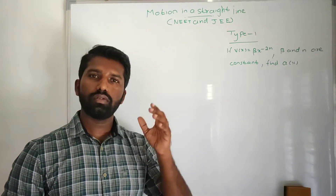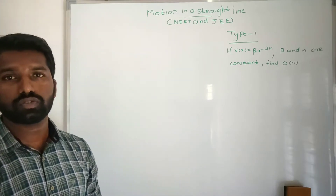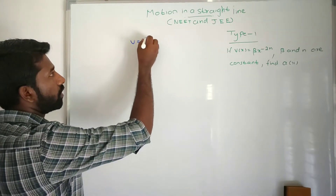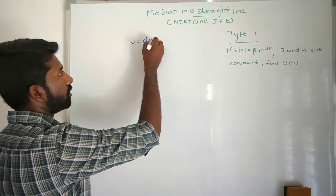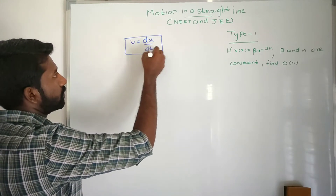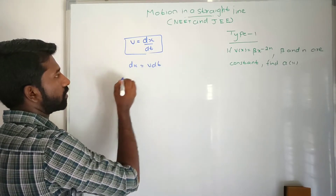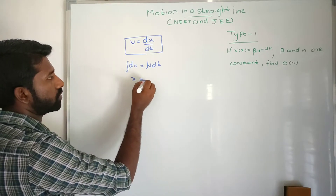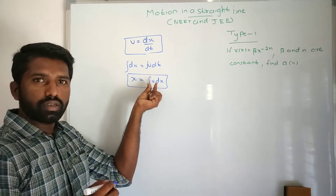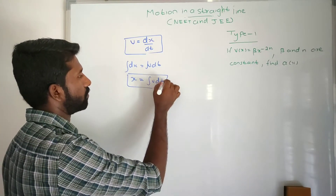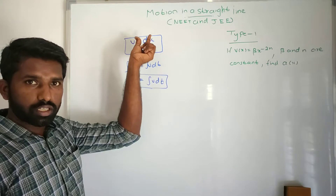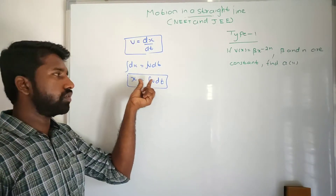What is velocity? Velocity is equal to displacement divided by time. What is instantaneous velocity? Instantaneous velocity is the rate of change of displacement with respect to time — that is dx/dt. From this, dx = v·dt. If you integrate both sides, x = ∫v dt. So if you integrate velocity with respect to time, you get displacement. If you differentiate displacement, you get velocity.